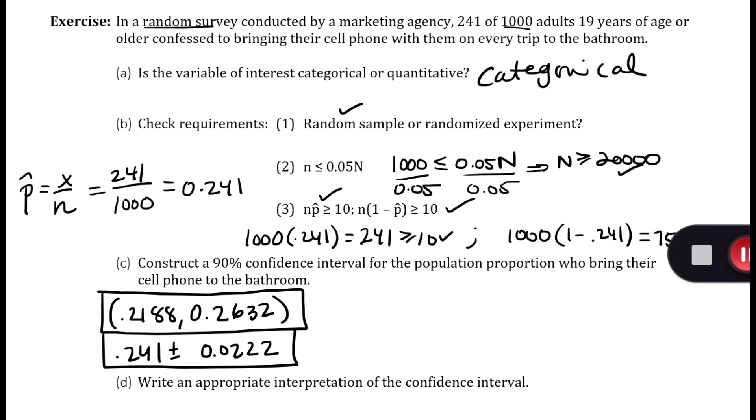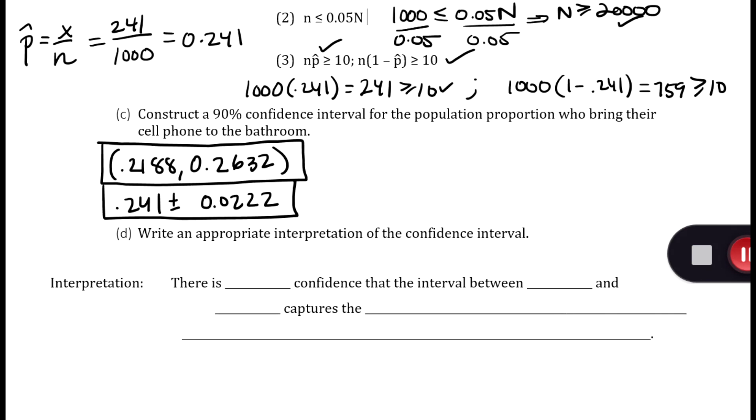Now we have to interpret this. On the original exercises there were not blanks to fill in, but just above this there were some blanks that we could fill in. We have our confidence interval, which is a 90% confidence. So we have 90% confidence that the interval between - these are going to be your lower and upper bounds - 0.2188 and 0.2632 captures the true proportion.